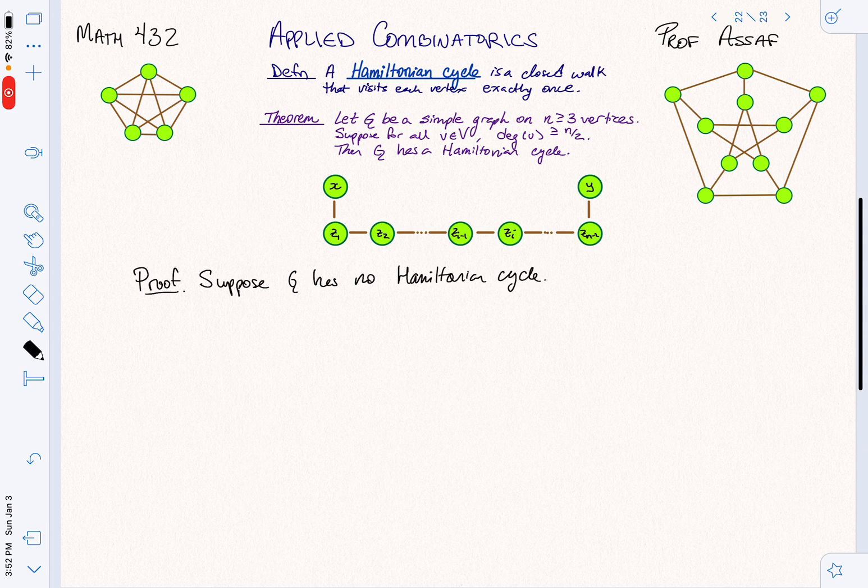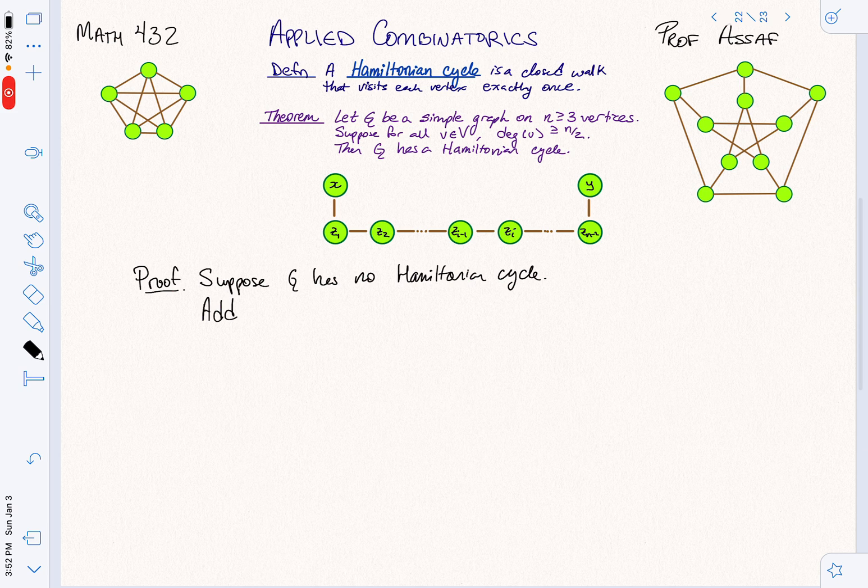So we're going to do this as a proof by contradiction. Often proofs by contradiction are non-constructive. So suppose G has no Hamiltonian cycle. So we get to assume that G, every degree has at least N over two neighbors. Every vertex has at least N over two neighbors. So what I'm going to do is I'm going to add edges to G and I'm going to make it incredibly dense.